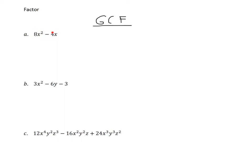8x squared and negative 4x. Let's just start with the numbers, 8 and 4. What is the largest factor that they have in common? It's going to be a 4. And now let's talk about the variables — x squared and x. What is the biggest one that they both have in common? They both have an x in common. So the GCF of this expression is going to be 4x.